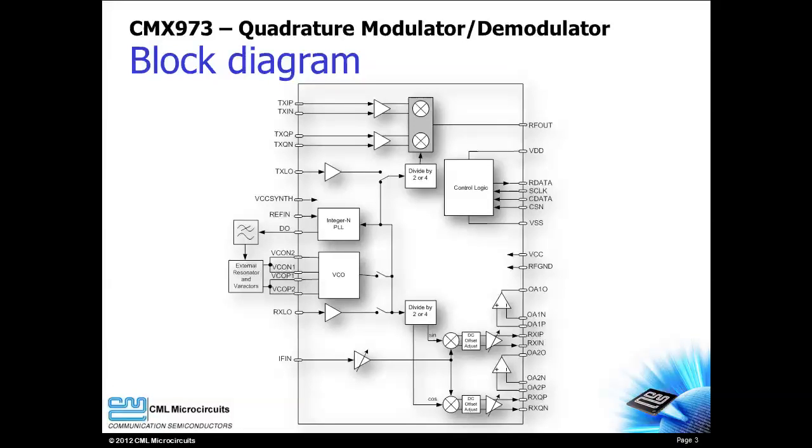The CMX973 provides a quadrature modulator, demodulator, integer N synthesizer, IF VCO, gain control, and uncommitted amplifiers.